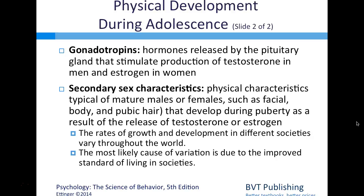A genetically determined timetable causes the pituitary gland to release growth hormone that triggers the rapid growth at the start of adolescence. The hypothalamus also increases production of chemicals that stimulate the pituitary to release larger amounts of gonadotropins—hormones that stimulate production of testosterone in men and estrogen in women.